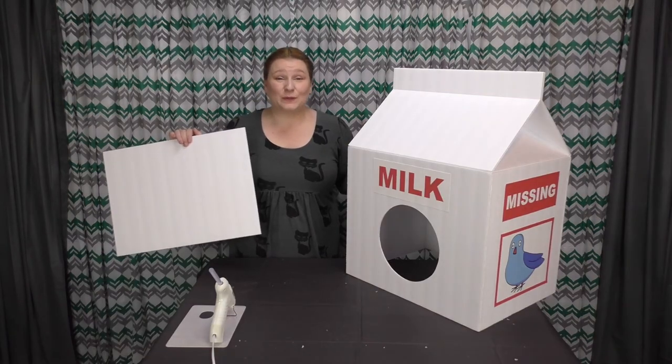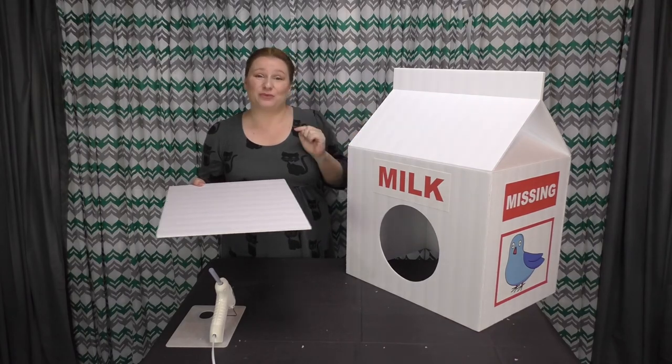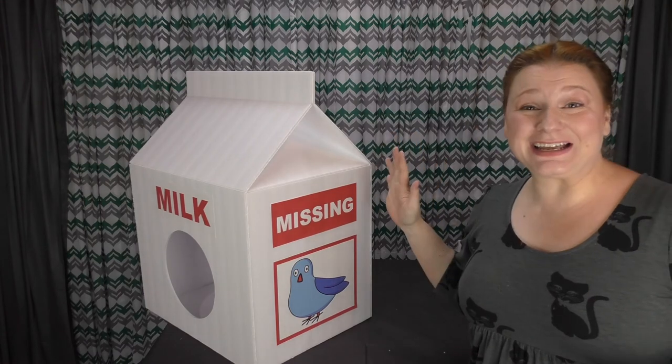The easiest way to glue the bottom on is just to set this on top of the sheet, and then glue from the inside reaching through the hole. So there we go. All done.